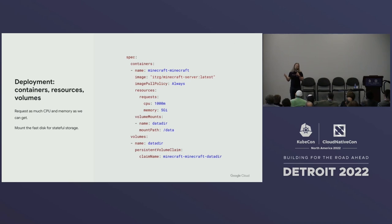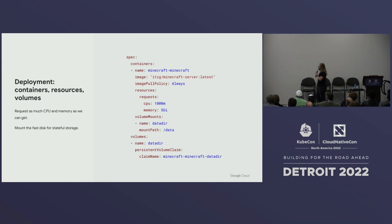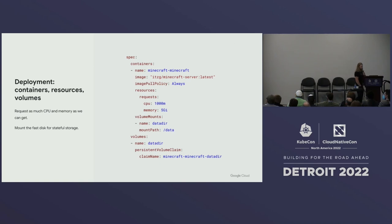I'm going to set up volume mounts. State is managed on disk, and in this container image configuration that state lives at /data from root. We're going to mount our fast-disk persistent volume claim into that location — that's how we keep our state inside the pod. So that's our stateful container.